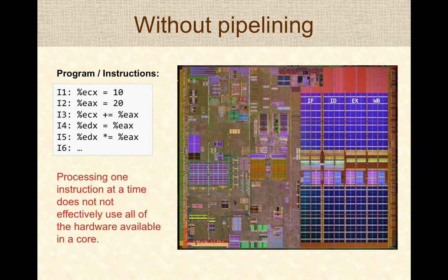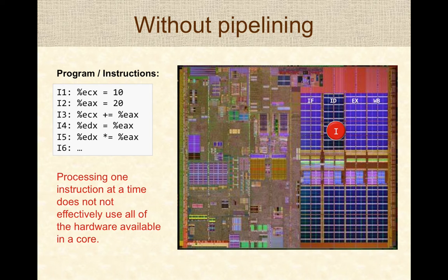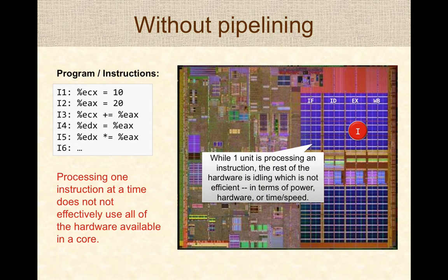From a hardware perspective, consider a program with several instructions using registers like ECX and EDX — think of these as temporary variables. Without pipelining, instruction processing is done one instruction at a time: the fetch unit fetches an instruction, then the decode unit decodes it, and so on. Only one unit is doing work while the rest of the hardware is idling, which is not efficient in terms of power, hardware resources, or speed. This is the issue that pipelining addresses.